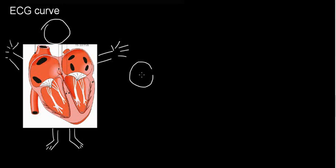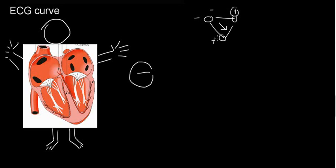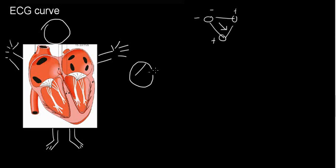Let's say we have this needle measuring the Eindhoven Triangle in general, and it's only measuring the integral vector. If the integral vector is going in that direction, we're going to have a positive reading — an upstroke. So a positive reading means deflection upward.